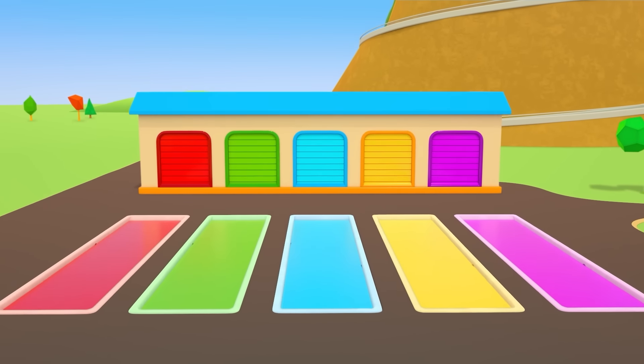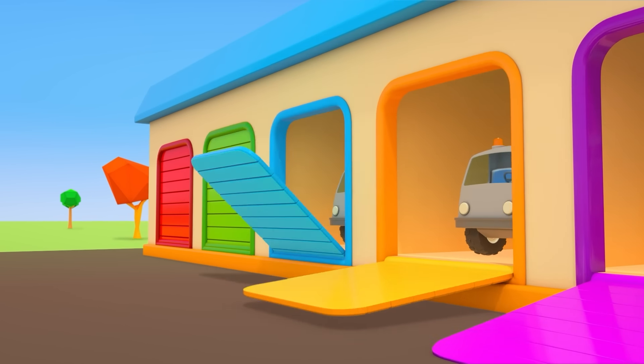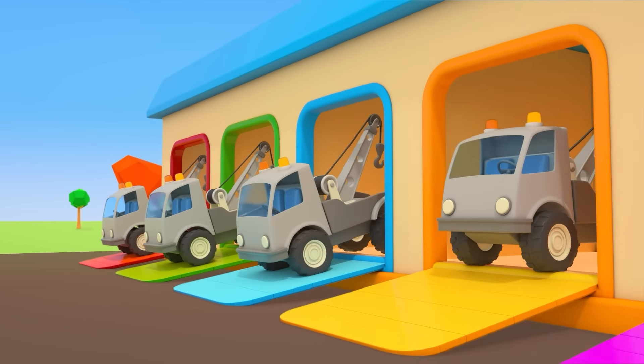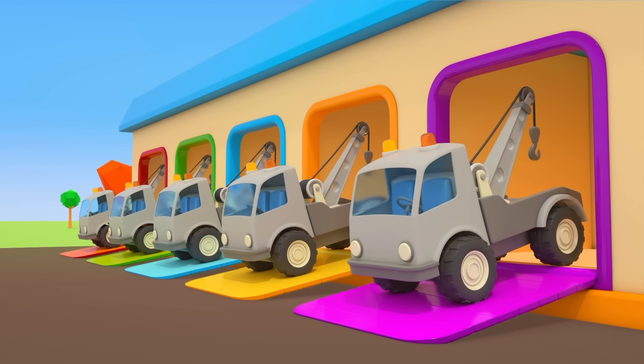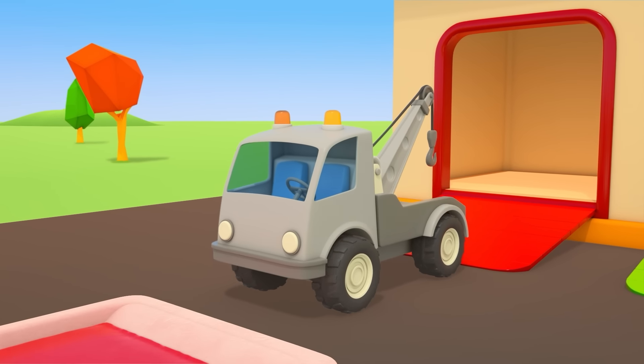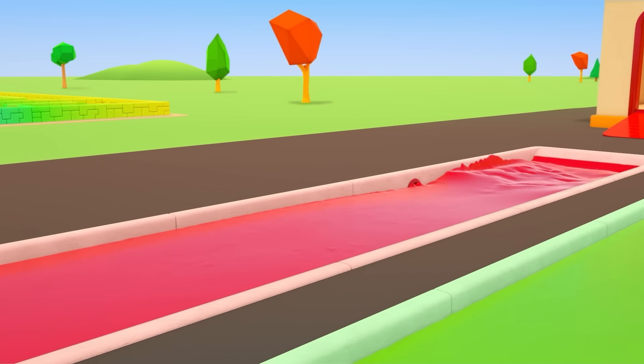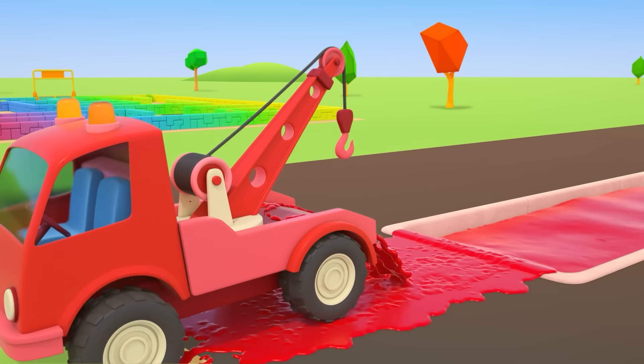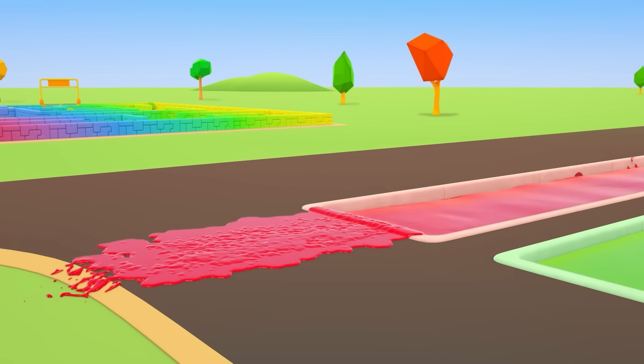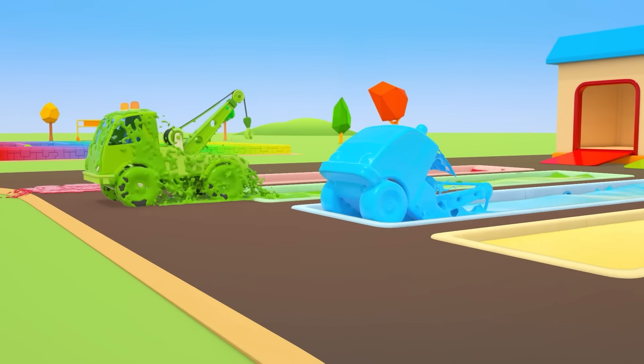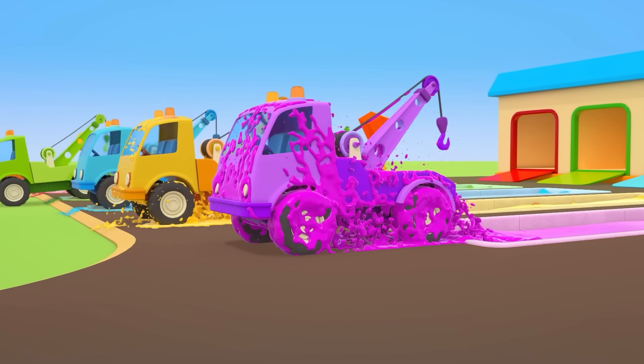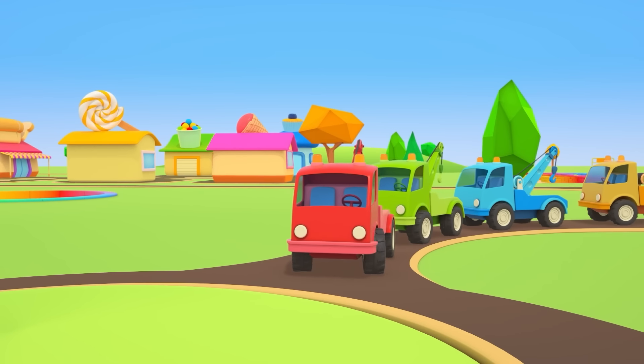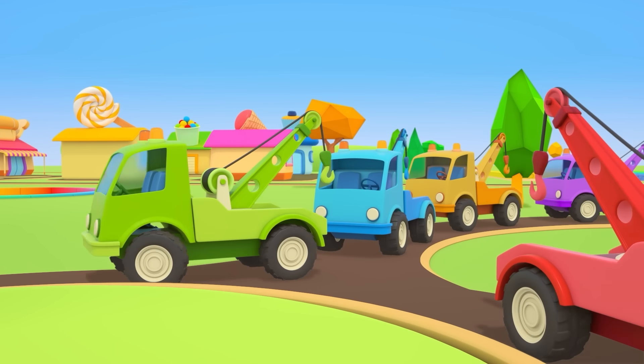This is the helper car's garage. The doors open and tow trucks come out. Today, challenging tasks await them. Let's paint each car a different color so that we don't mix them up. Let's paint the first tow truck red, the second one green, the third one blue, the fourth one yellow, and the fifth one purple. The tow trucks are ready. Who needs help?